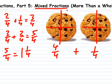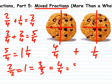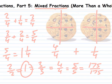Just remember, any number over itself equals 1, so 2 halves equals 1, 3 thirds equals 1, 4 fourths, 5 fifths, even 175 175ths equals 1.